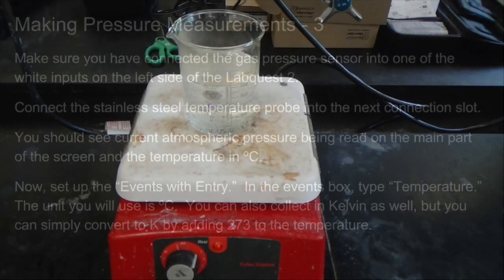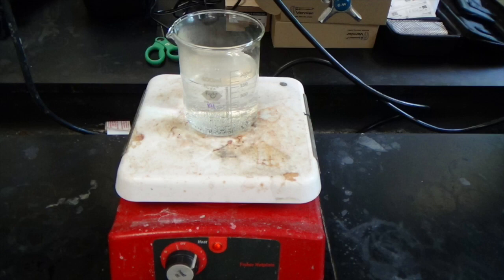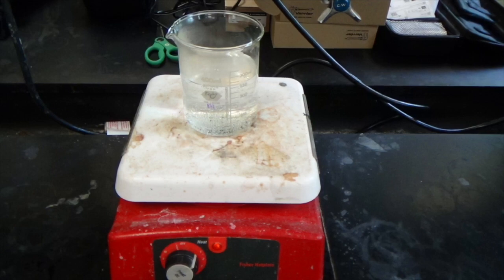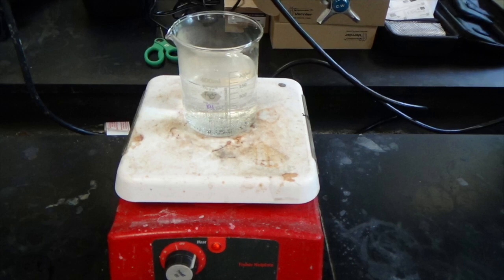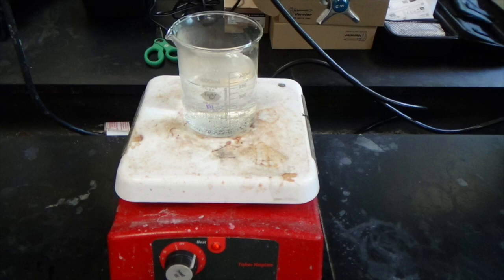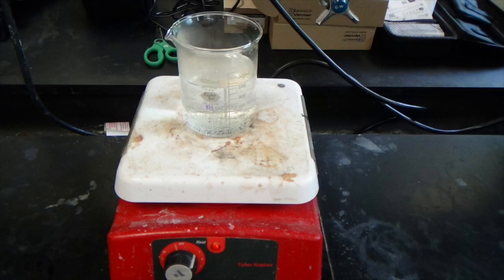You should have three 250 milliliter beakers at your workstation. In one of these beakers add about two thirds full of water, so around 150 to 200 milliliters of water in the beaker and set on a hot plate. You want the water to reach a temperature above 60 degrees Celsius.